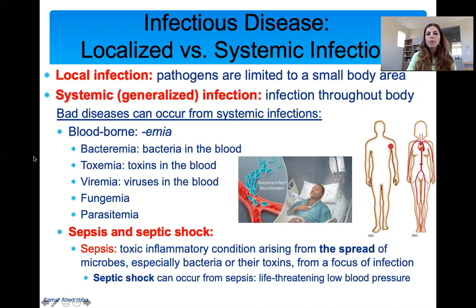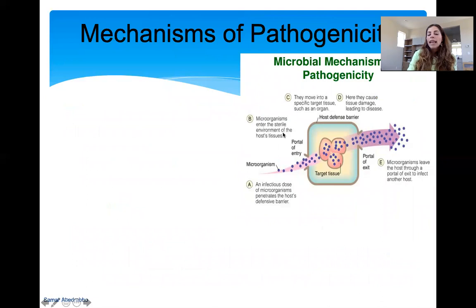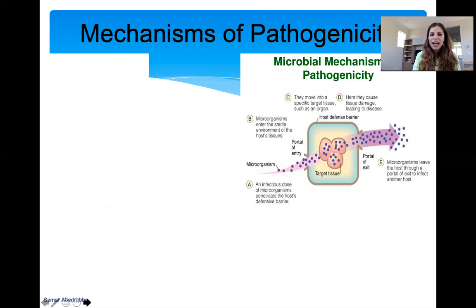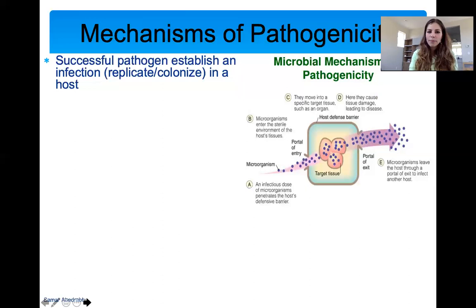A lot of times people start with a very small local infection that quickly progresses into a systemic infection because their body can't fight it. Now we're moving on to mechanisms of pathogenicity. For an organism to be pathogenic or cause disease, it needs different mechanisms. A successful pathogen is one that establishes an infection by replicating or colonizing your body. To do that, it needs to evade your immune system, harm your tissue, and do several other things.